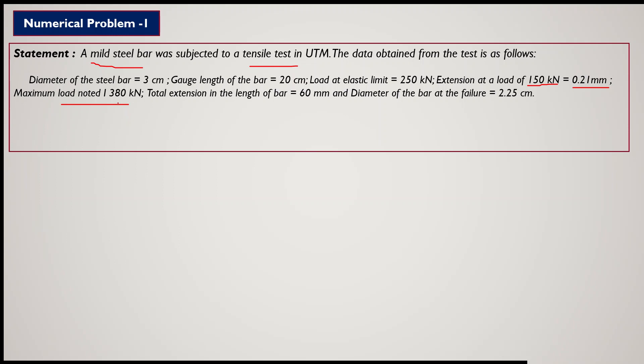The maximum load is 380 kN — that is the peak point. The total extension in the length of the bar is 60 mm, which is the maximum extension. The diameter of the bar when it gets fractured is 2.25 cm. So the original diameter before extension is 3 cm, and after the bar fractures the final diameter is 2.25 cm. Going through the statement carefully allows you to correlate the data with the stress-strain graph.